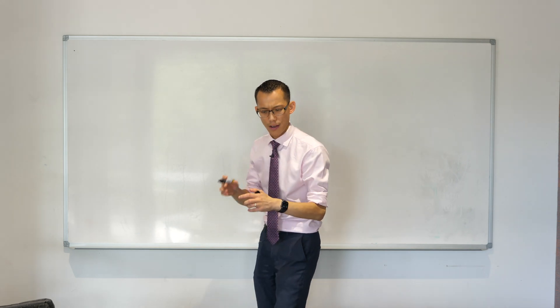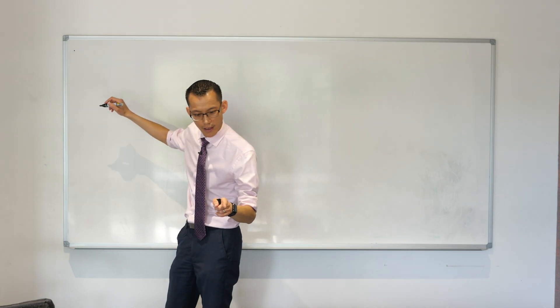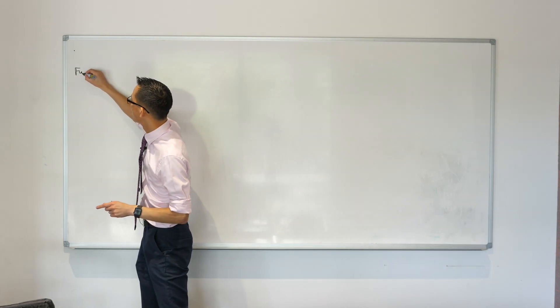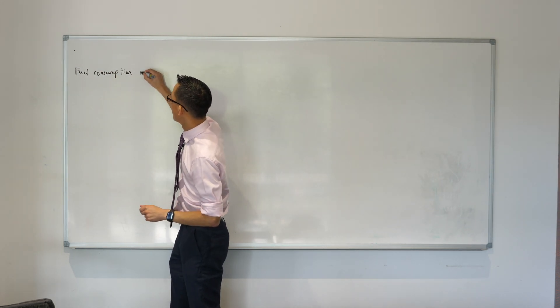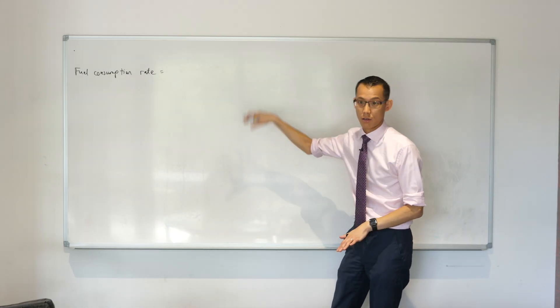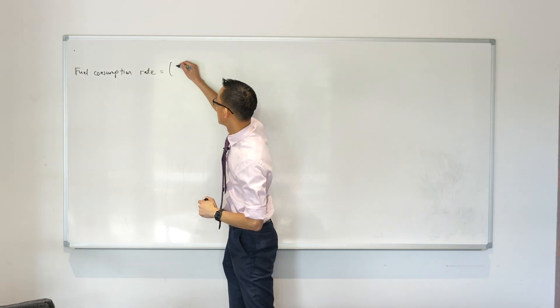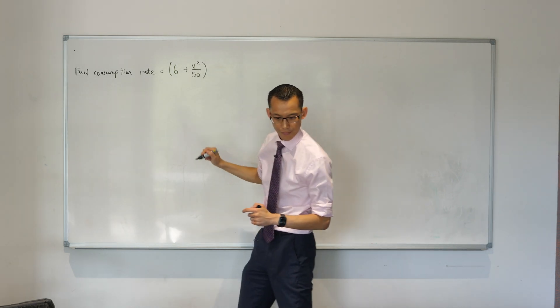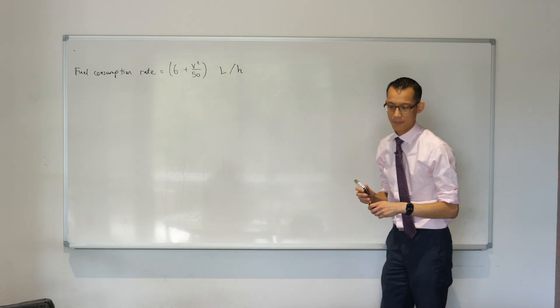Fantastic. So the car consumes fuel at the rate of, so this is fuel consumption. And by the way, even though it may seem a little bit like, oh man can we avoid writing so many words, there's gonna be a lot of equations flying around so it's super important that as we write things down we know what it is they refer to. So I've got 6 plus V squared on 50, is that right? And then the unit is liters per hour.